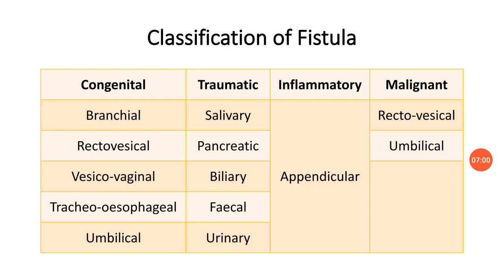Classification of fistula on the basis of causes: first, congenital — present since birth. Branchial fistula occurs due to failure of union of the second branchial arch to the fifth branchial arch, and it is present in the neck.